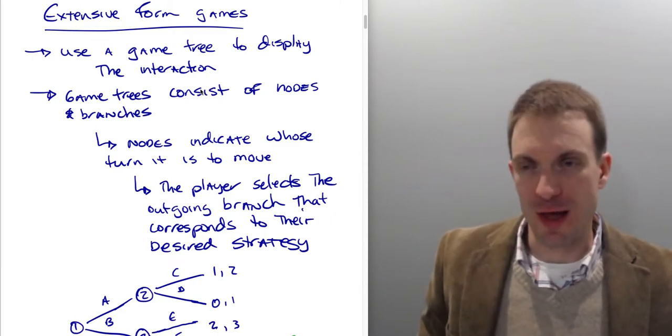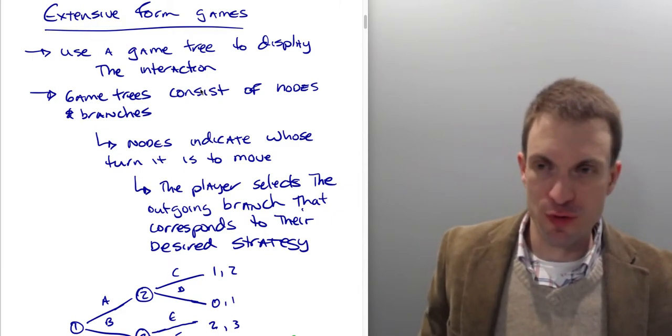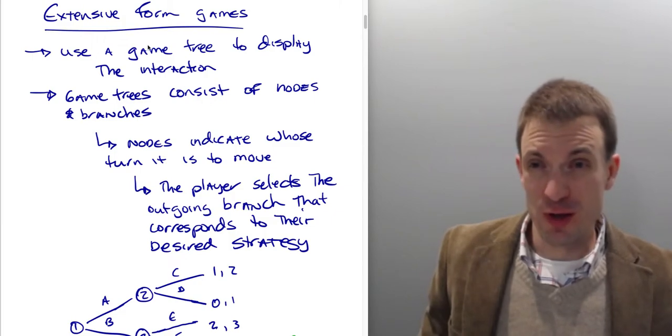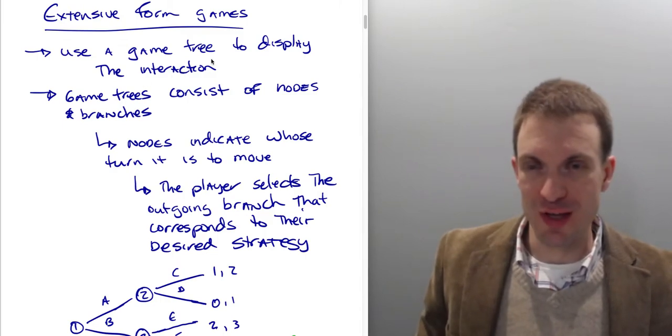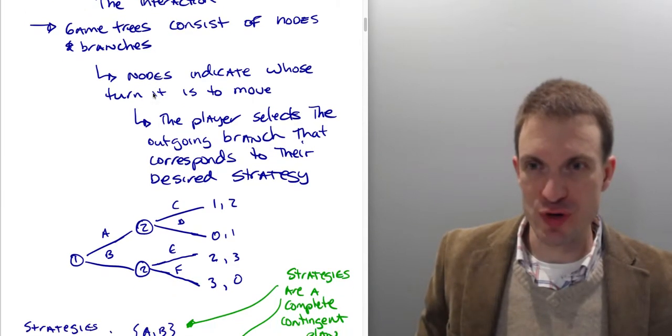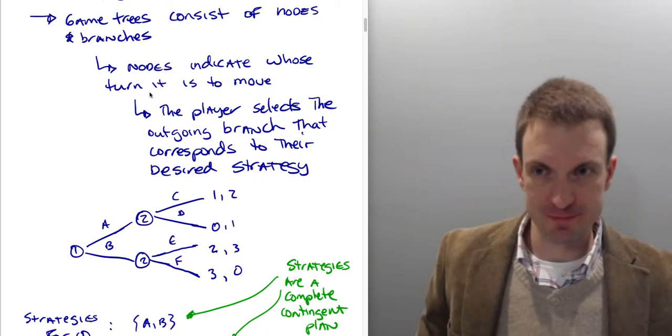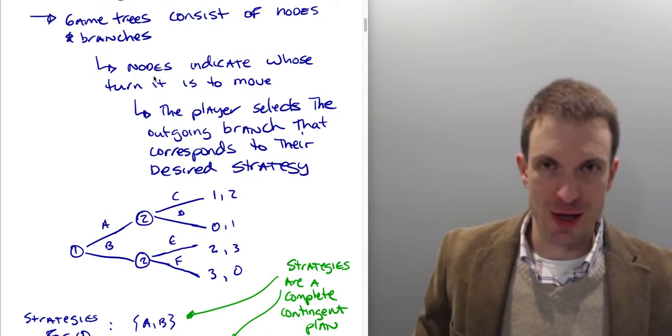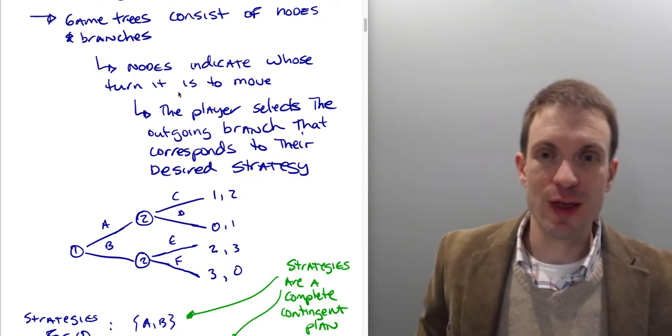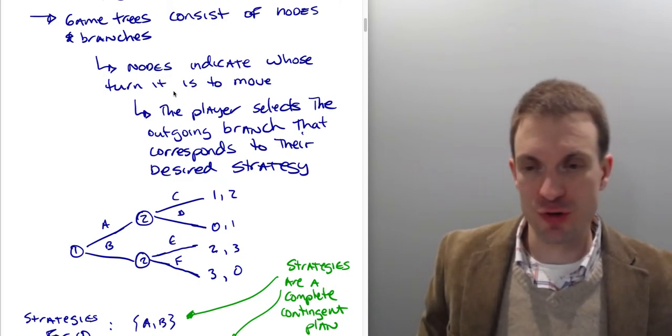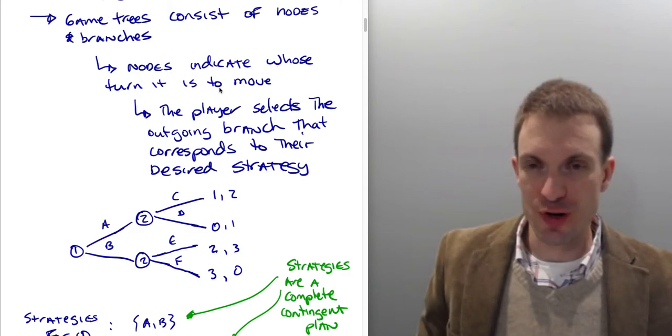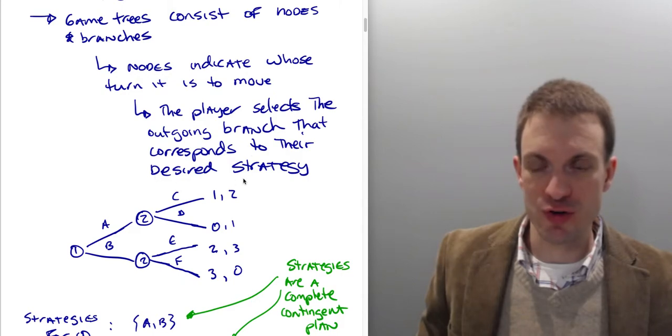But a lot of games that people would encounter in normal form are going to be matrix form. Here's an extensive form game and we're going to use a game tree. Trees consist of nodes and branches. The nodes indicate basically whose turn it is to move. And then we'll label branches to correspond to player strategies. So the nodes indicate whose turn it is to move. The player selects the outgoing branch that corresponds to their desired strategy.